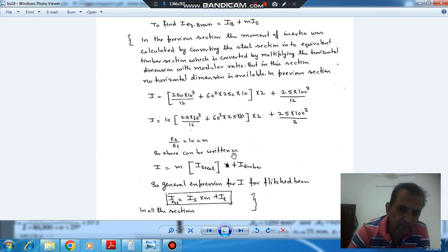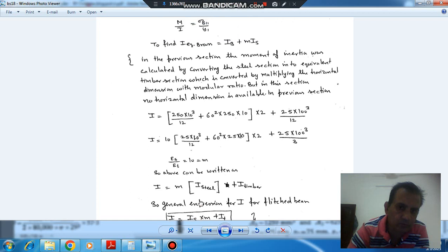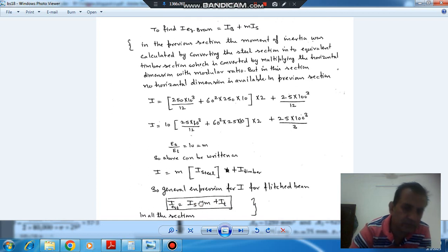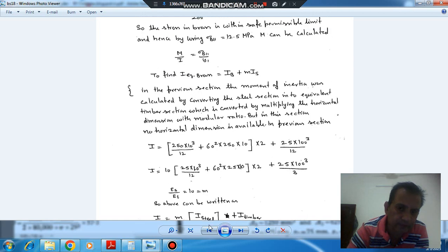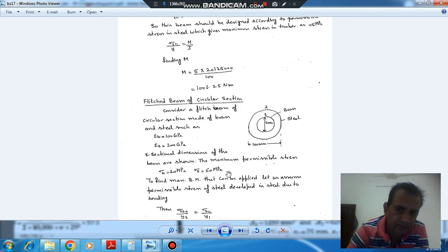So for this we can also write I is equal to m·I_steel plus I_timber. So this is the general expression. So in all cases, whether it is circular, whether it is rectangular, so for this section, as there is no horizontal dimension change, we can use this expression.